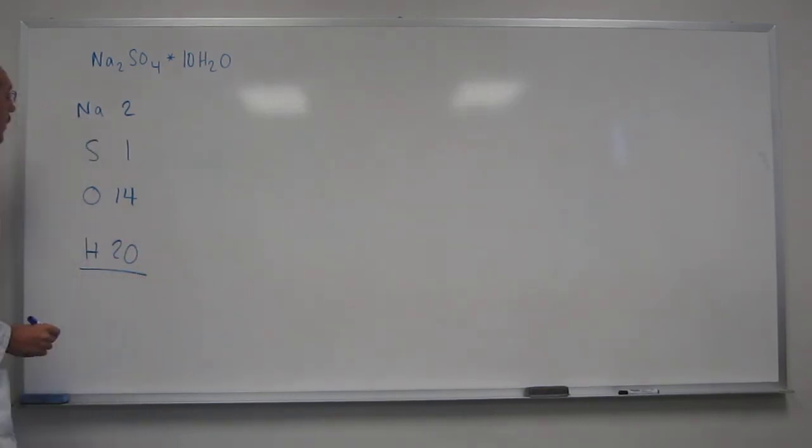Okay, so the next thing we've got to do is add all of those numbers up. Get your calculator out, because you can have a calculator on everything in this class. So two plus one plus fourteen plus twenty is going to be thirty-seven.